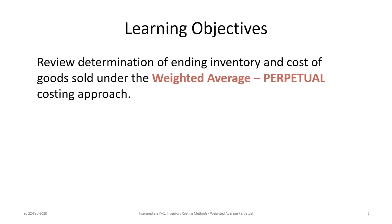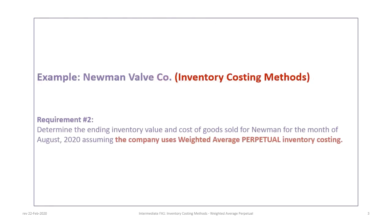We have one learning objective for this tutorial: to determine the ending inventory and cost of goods sold under the weighted average perpetual approach. This tutorial continues with the Newman Valve Company example, so please make sure that you have the correct file and have previewed the information before proceeding. Our requirement is to calculate the ending inventory and cost of goods sold for the month of August assuming the company uses weighted average perpetual inventory costing.